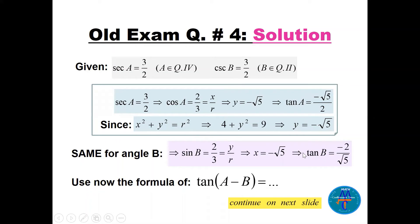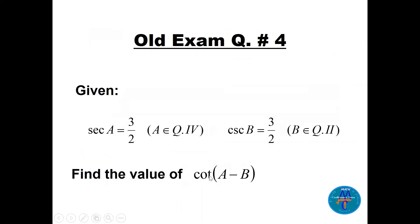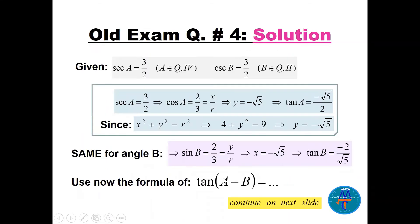So tan(b) = y/x = 2/(−√5) = −2/√5. We can rationalize to get −2√5/5. Now we need cot(a − b), so we first find tan(a − b) using the tangent difference formula, then take its reciprocal.